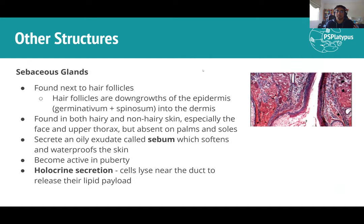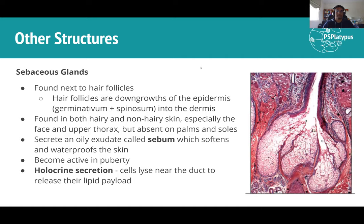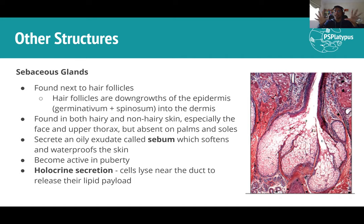Sebaceous glands are oil glands found next to hair follicles — a hair follicle being a downgrowth of the epidermis into the dermis. These glands secrete sebum, an oily substance that softens and waterproofs the skin. They become very active during puberty. They use holocrine secretion — cells lyse themselves to release their lipid payload into the duct, which then travels along the hair follicle.